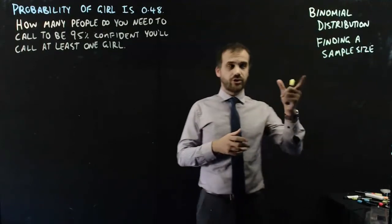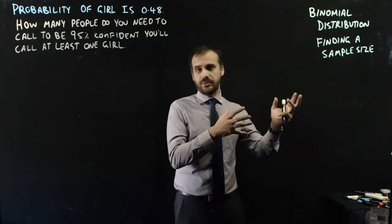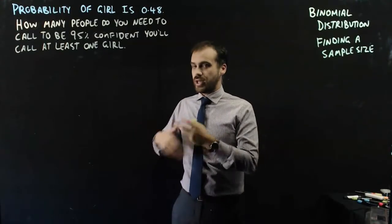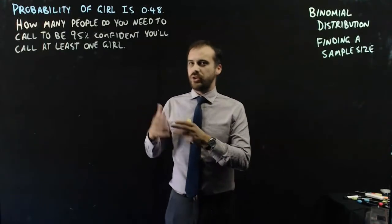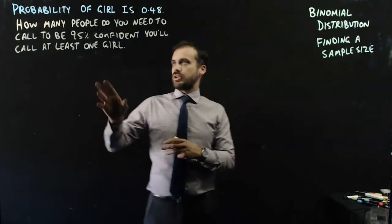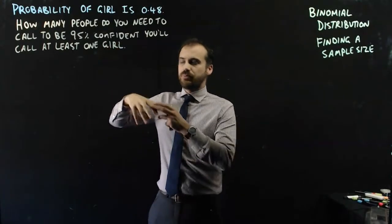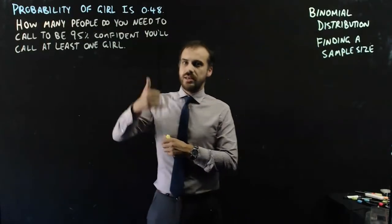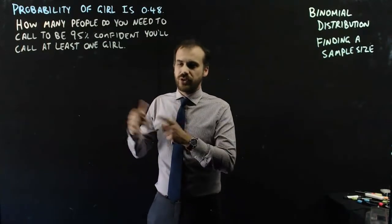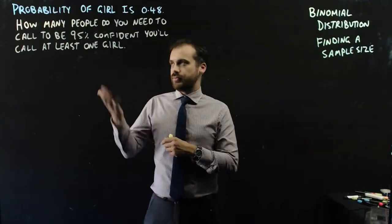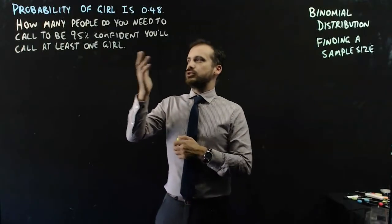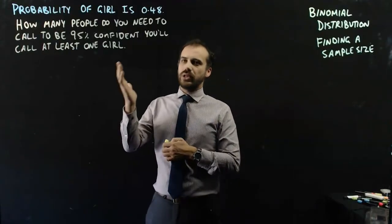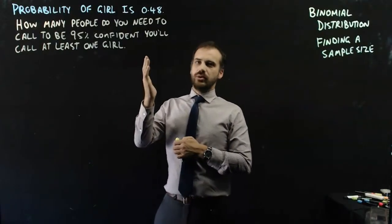Binomial distribution — this time we're trying to find the sample size. This is a really interesting question, and we'll talk about 95% confidence. If you're in a population, there is a 48% chance that any person you call, picking some random phone numbers, that person is a girl. How many people do you need to call to be 95% confident you'll call at least one girl?